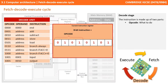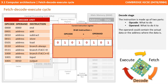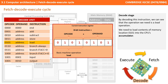As mentioned in one of our previous videos, the instruction is actually made up of two parts. Although you don't need to know this level of depth for the exam, it's worth going into briefly for completeness. The instruction is made up of the opcode — that's what we have to do — and the operand — what are we going to do it to. The operand could contain the actual data, or it could contain an address of where the data is to be found. By decoding this instruction, we can see the operation we need is a load operation: we need to load the contents of memory location 0101 into the CPU's accumulator.